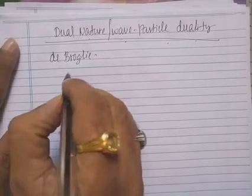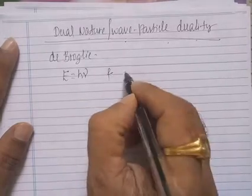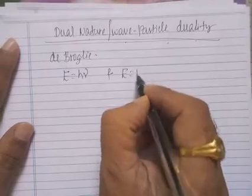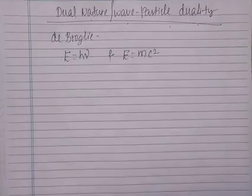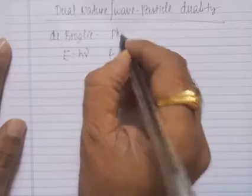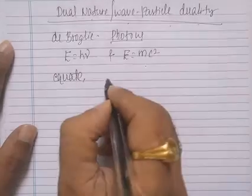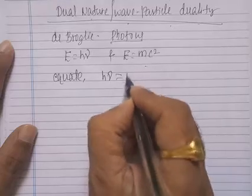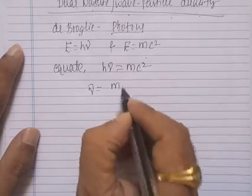The two fundamental equations obeyed by photons are: one, E = hν, and another, E = mc². These are the two fundamental equations obeyed by photons according to de Broglie. Now if you equate these two equations, that is hν = mc².